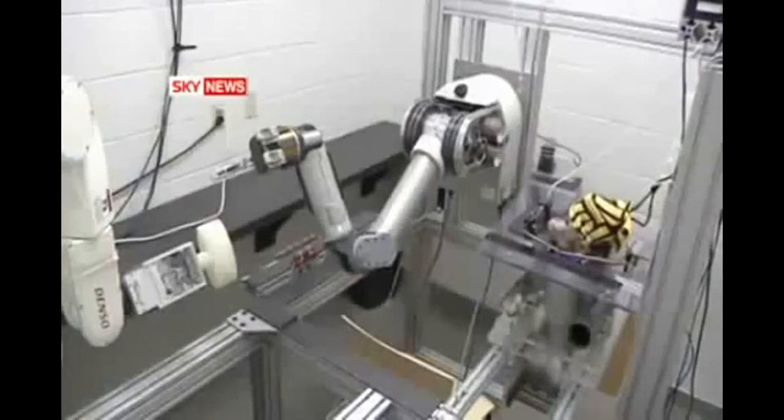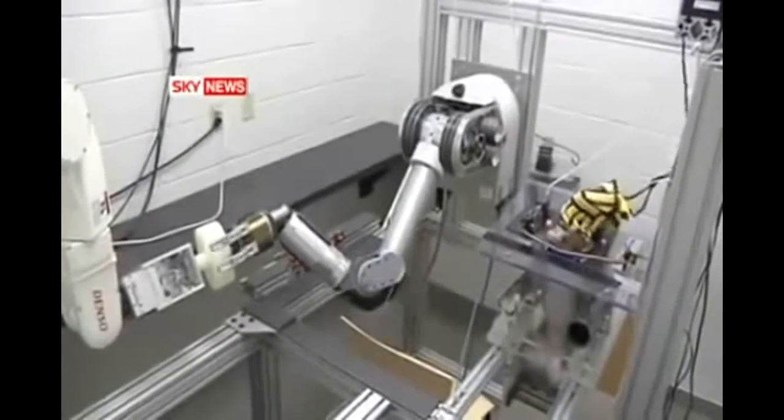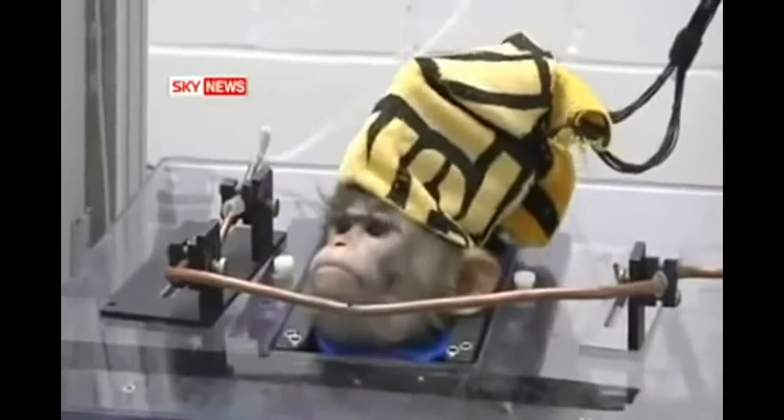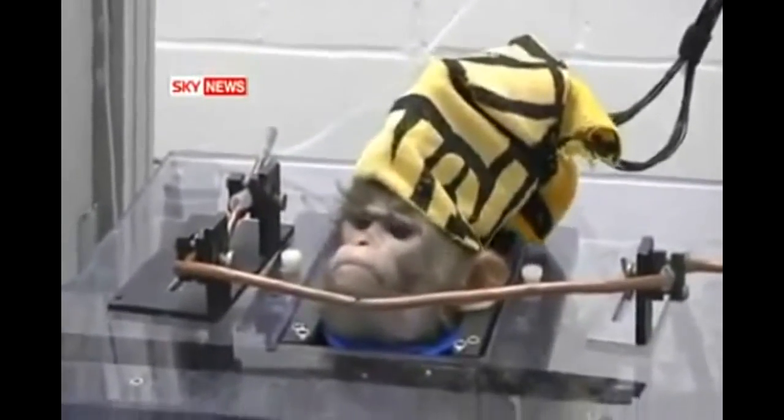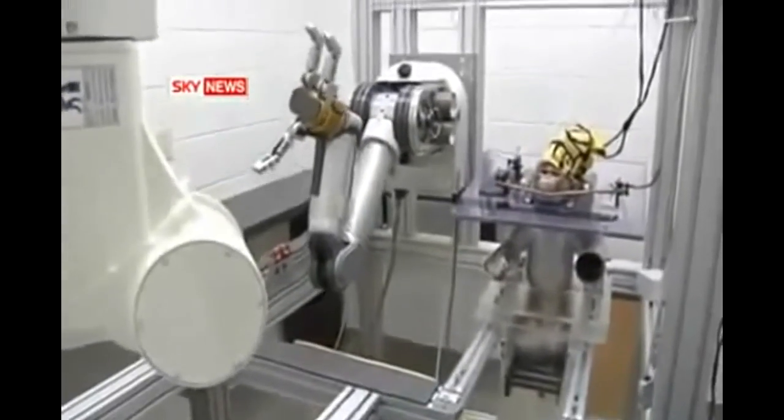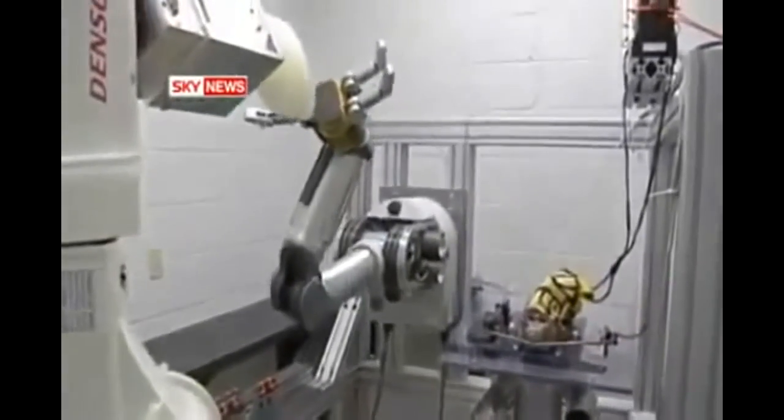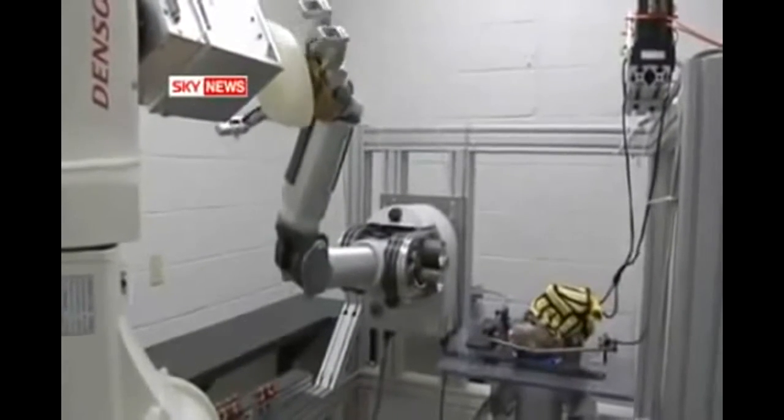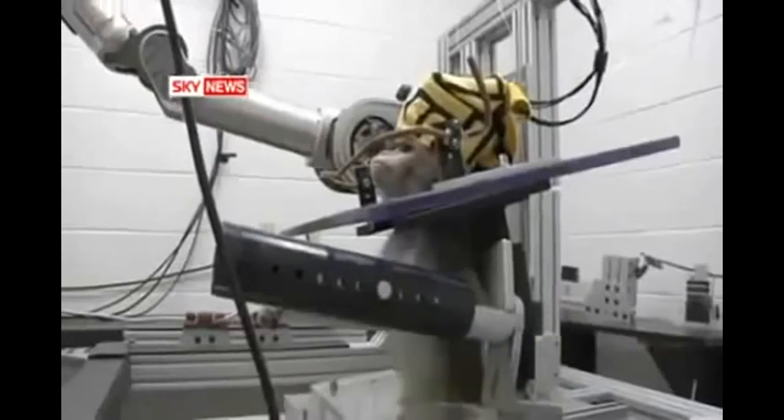The astonishing dexterity: a monkey reaches out to grab and turn a handle with a robotic arm controlled not by its hands but directly by its brain. With the power of thought it can alter the speed and direction of the arm, twisting the joints to home in on its target.